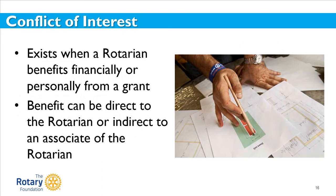A conflict of interest exists when a Rotarian may benefit financially or personally from grant activities, either directly or indirectly. Financial benefits could include receiving grant funds for being a project manager or as a vendor. Personal benefits could include receiving a promotion, getting business referrals, or gaining publicity or improved social standing. Associates can include family members, friends, other Rotarians, personal acquaintances, colleagues, and business partners. Rotarians have a reputation for professional integrity, and addressing and preventing conflicts of interest helps preserve this reputation for the club, the district, and the Rotary Foundation.